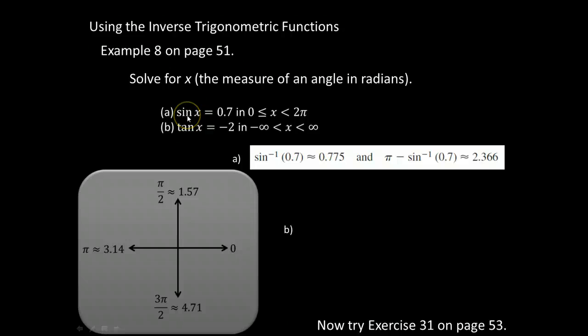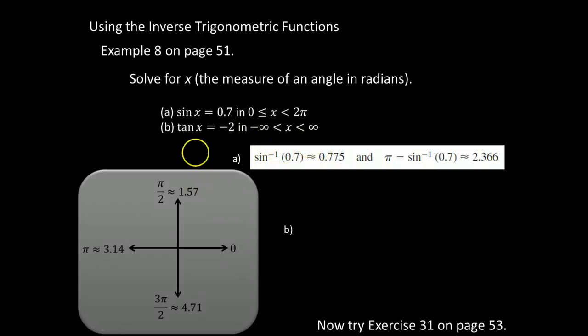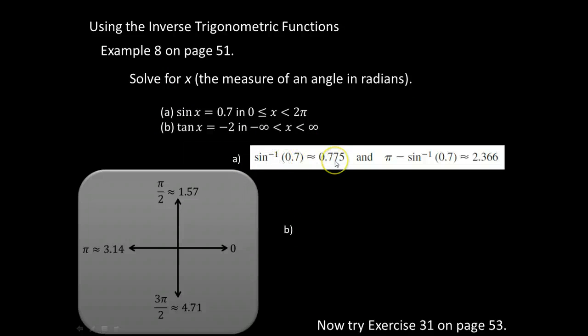So if I'm trying to find x and I know that sin(x) = 0.7, to solve for x, I'm going to take the inverse sine of each side. So the inverse sine of 0.7 is equal to approximately 0.775.